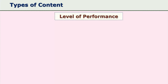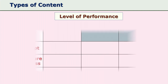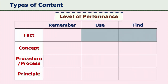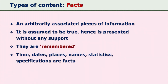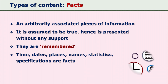Now let us look at the types of content in detail. The matrix shows four types of content in a column: facts, concepts, procedures, and principles. Facts are arbitrarily associated pieces of information assumed to be true — you cannot prove them. They are taken as they are; nobody questions facts.